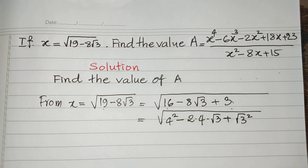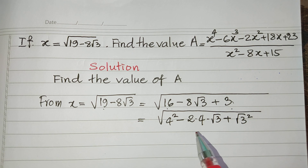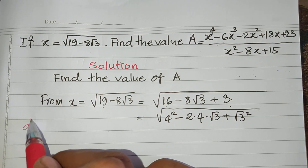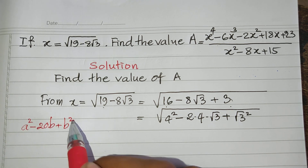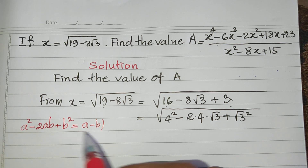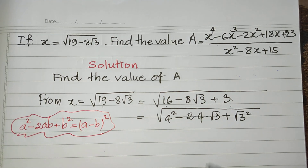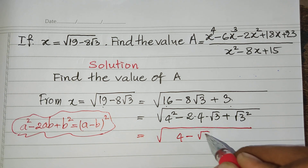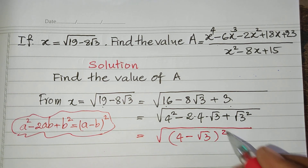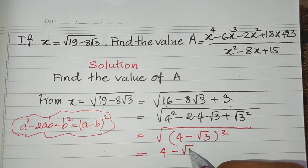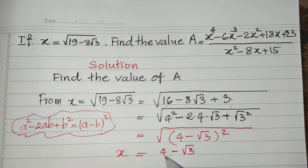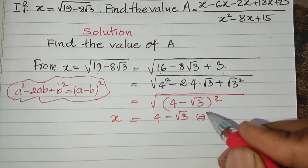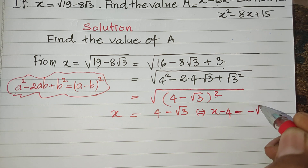This is equal to (a minus b) squared. So I use this formula, so it equals square root of (4 minus square root 3) squared. Simplifying the square root with the square, it equals 4 minus square root 3. So we get h equals 4 minus square root 3. Moving 4 to the left side, h minus 4 equals negative square root 3.